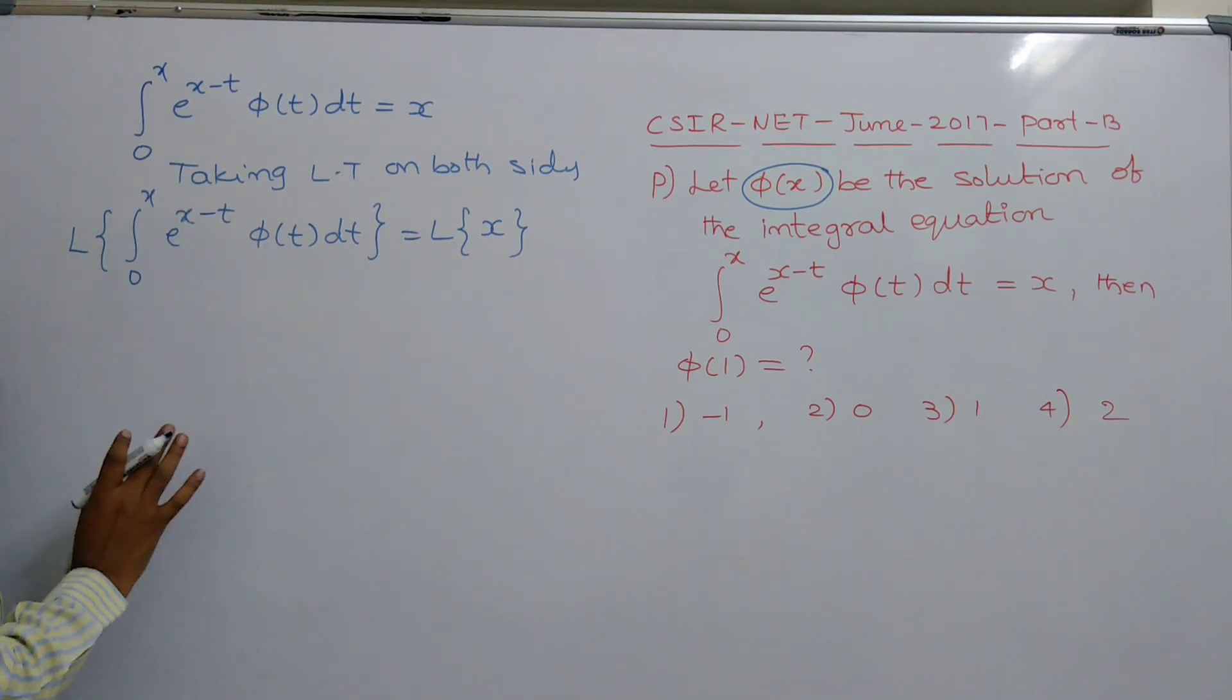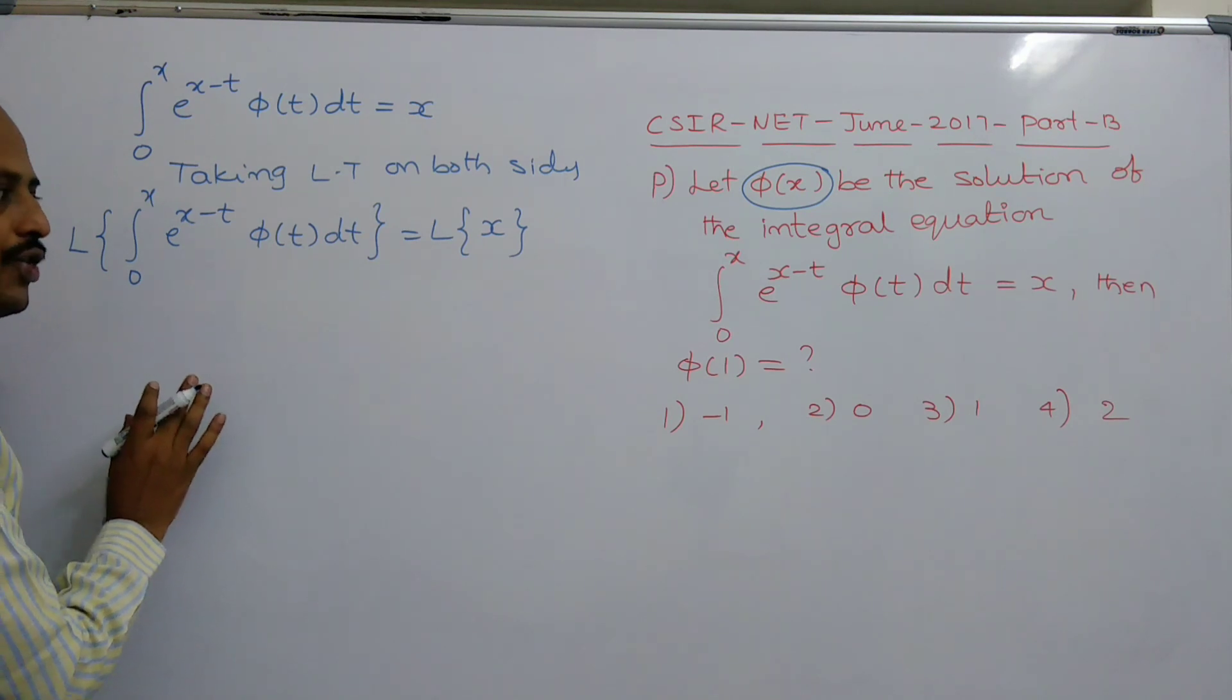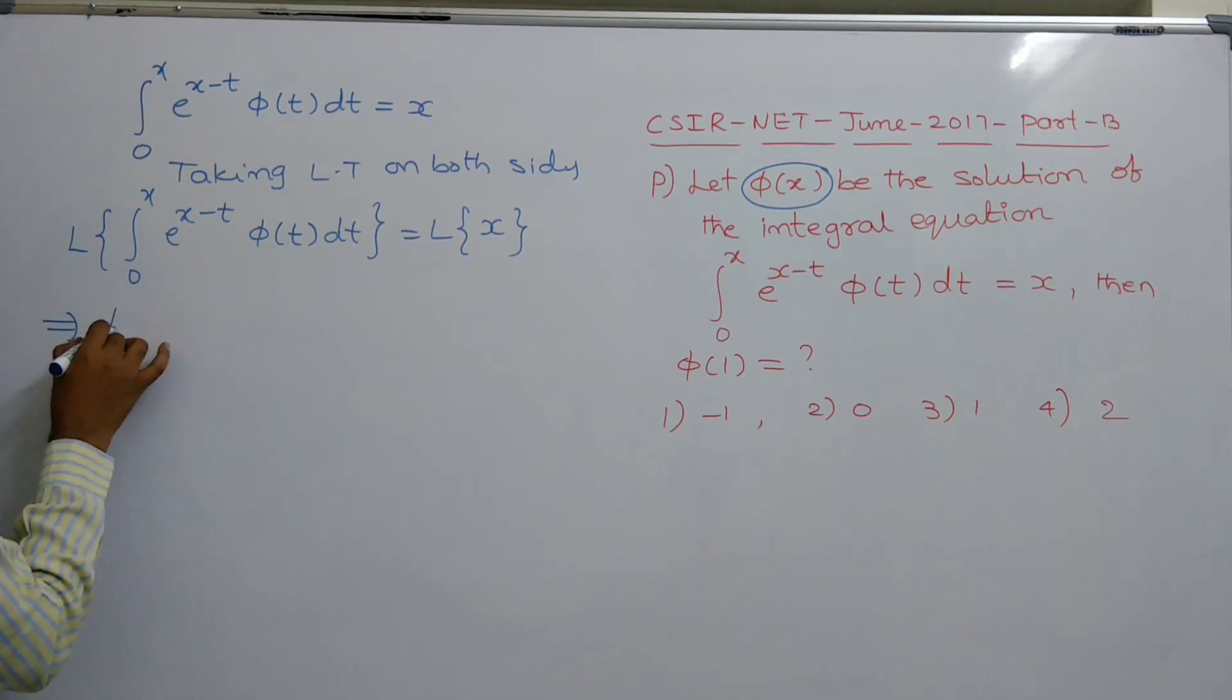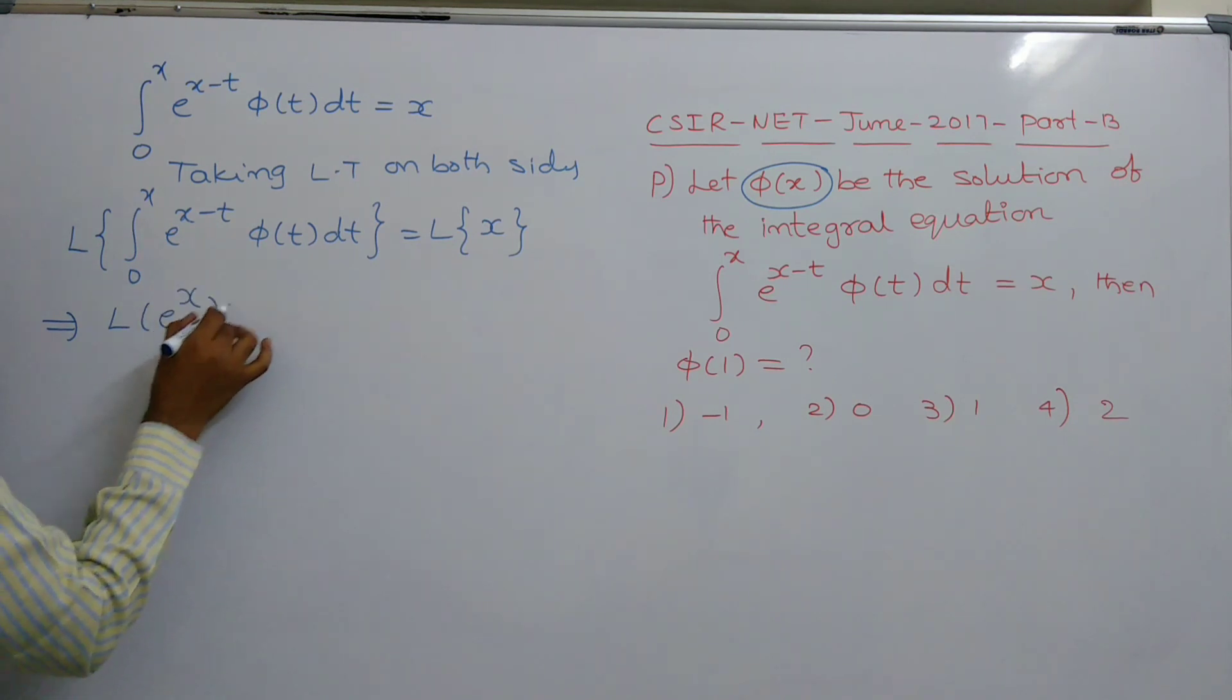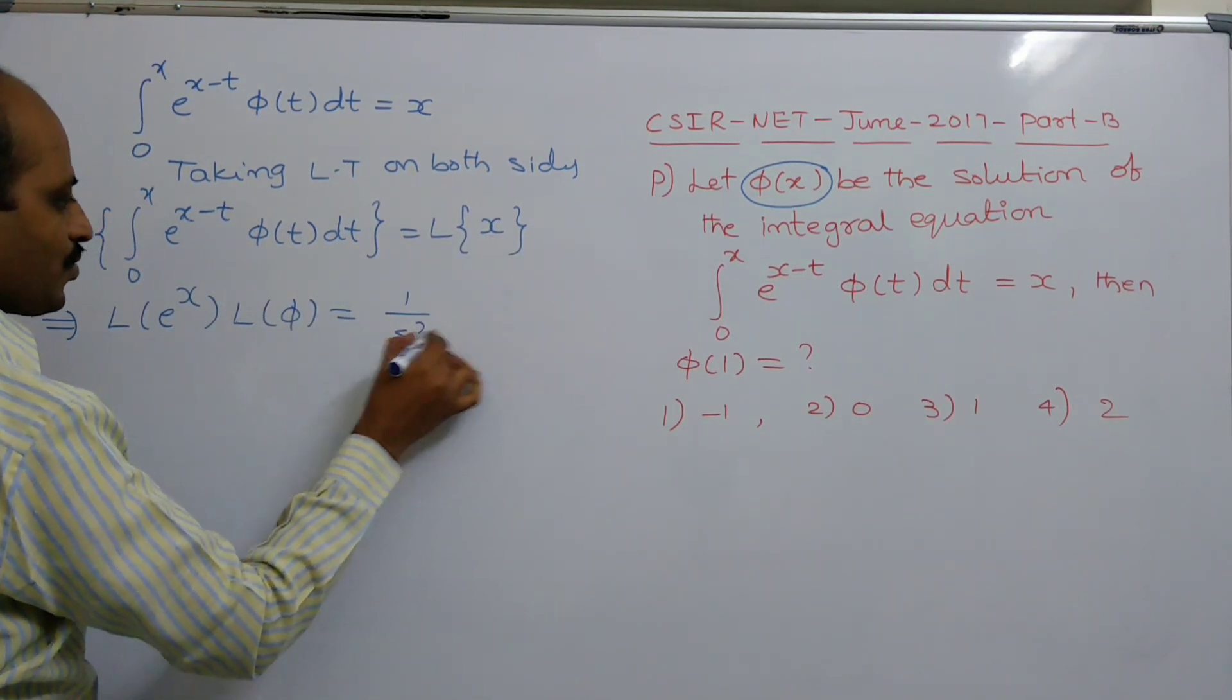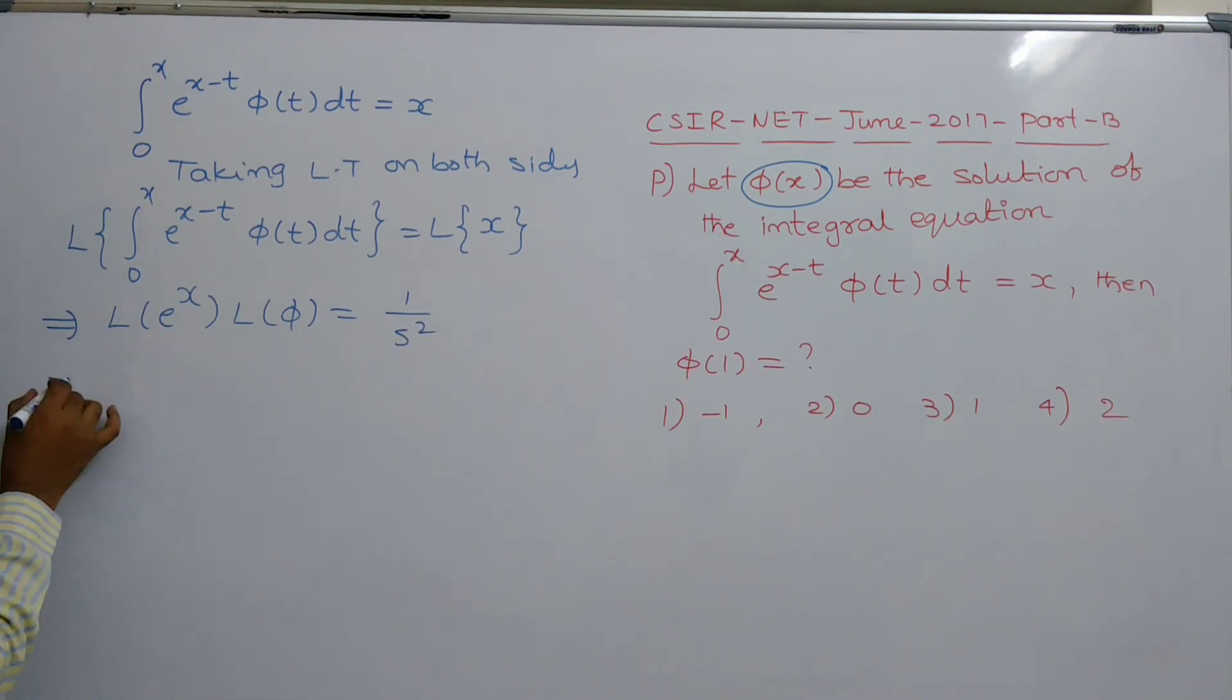then the integral is known as convolution integral. So, Laplace transform of convolution integral can be written as L of e power x into L of φ. L of x is 1 by s square. Which implies,